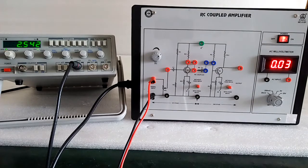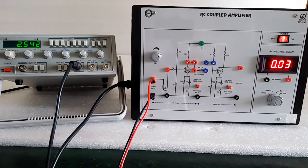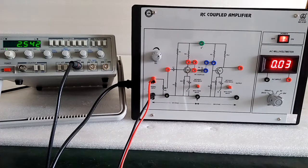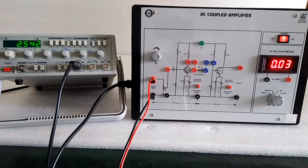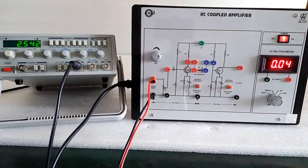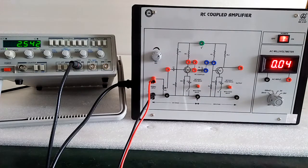Here is the Mars made RC coupled amplifier with AC millivolt meter. This amplifier kit is used to see the amplifications of single stage and two stage and make the graph between gain and input frequency.